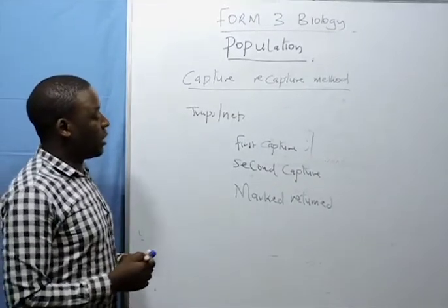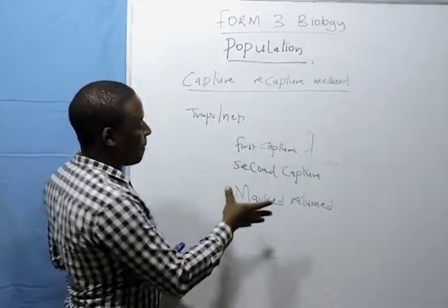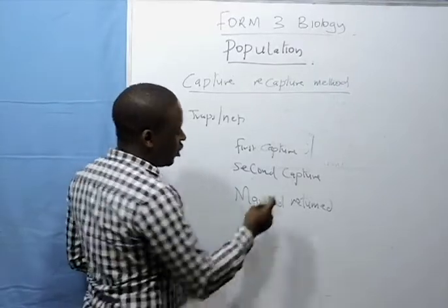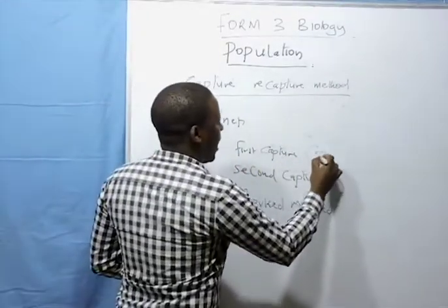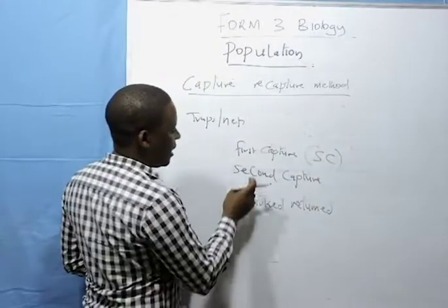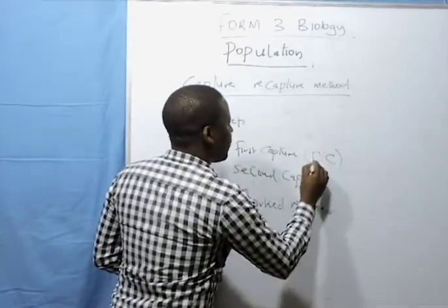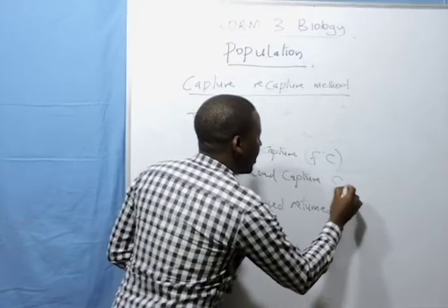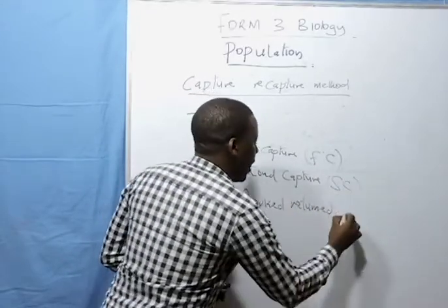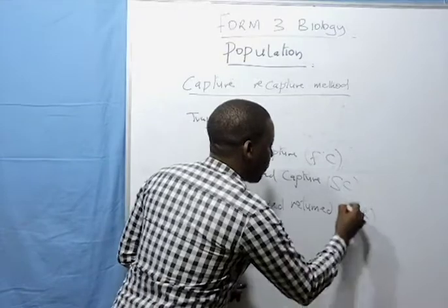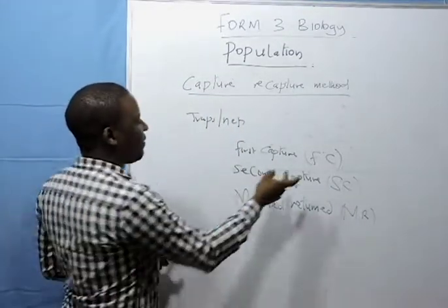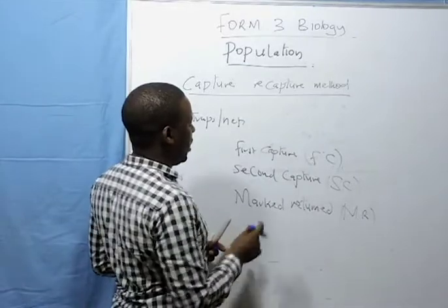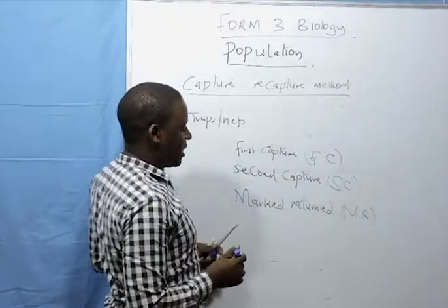The initials of this: first capture is FC, second capture is SC, marked returned is MR. So we have FC first capture, second capture SC, marked returned MR.